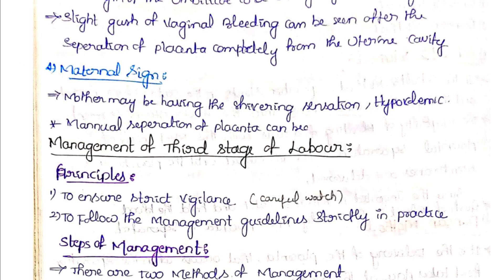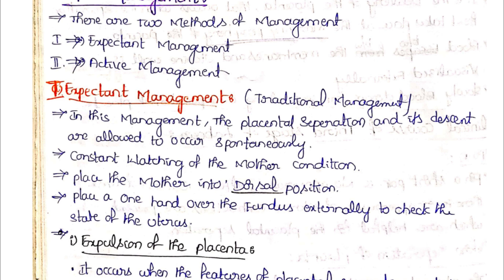Management of the third stage of labor: the principles include ensuring strict vigilance, being careful with the mother and the process, following management guidelines strictly, and maintaining a complete aseptic process. Steps of management are expectant management and active management. Expectant management is the traditional way, where placental separation and descent are allowed to occur spontaneously.